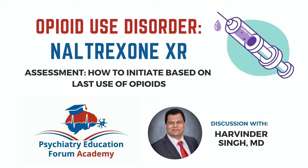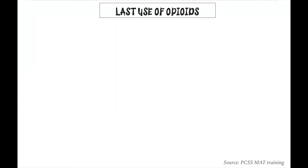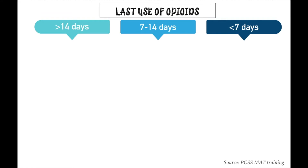Let's begin with our first topic — an assessment flowchart you can follow for most of your patients. The first factor to consider before starting this medication is your patient's last use of opioids. There are three timelines to focus on: more than 14 days (two weeks), between 7 to 14 days (one to two weeks), or less than 7 days (less than a week).